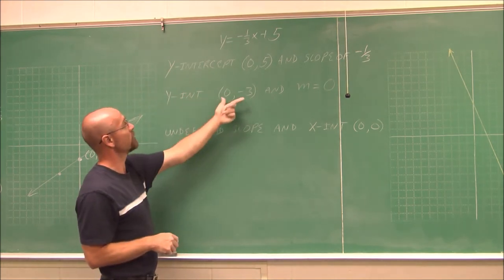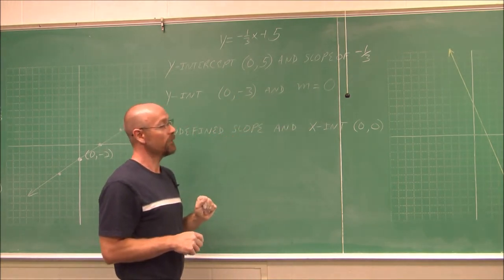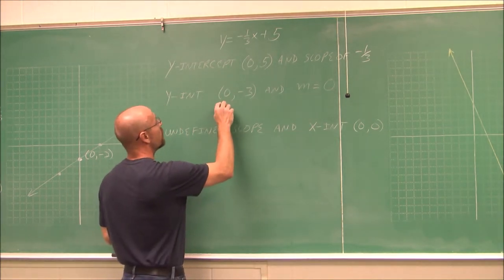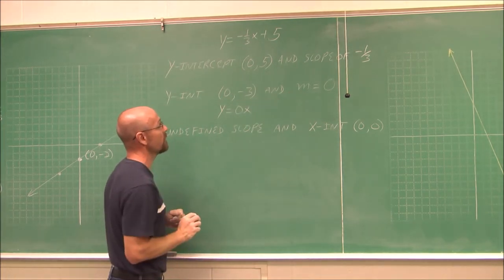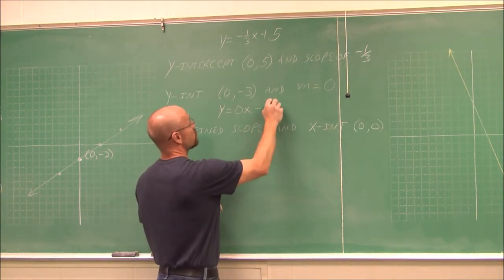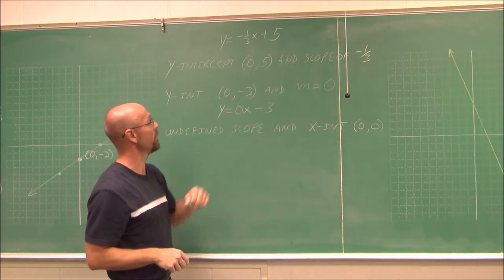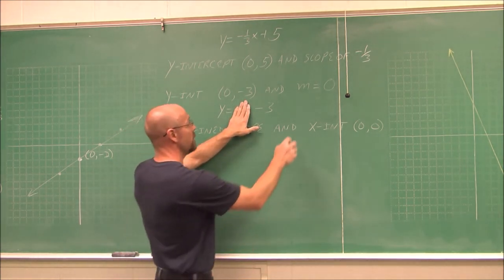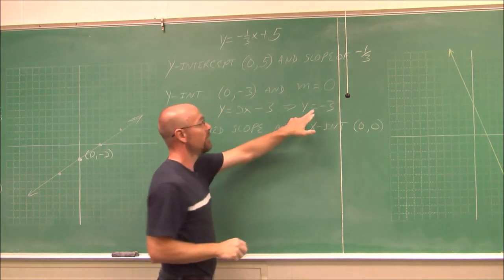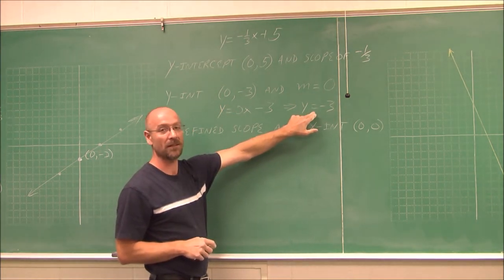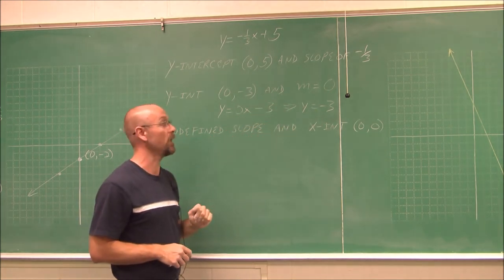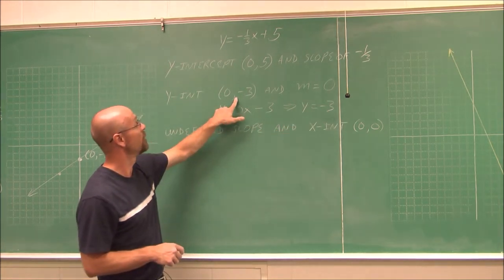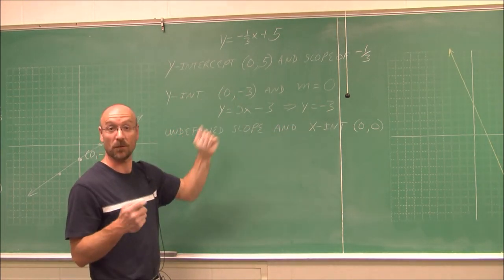Another example: the y-intercept is (0, -3) and the slope m is 0. Putting this into slope-intercept form: y equals 0 times x plus negative 3, which simplifies to y equals negative 3, since 0 times anything is 0. This is a special kind of line — a horizontal line. y is a constant and never changes, so the graph is a horizontal line passing through negative 3 on the y-axis.